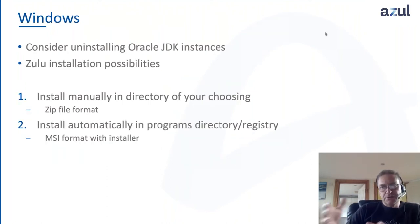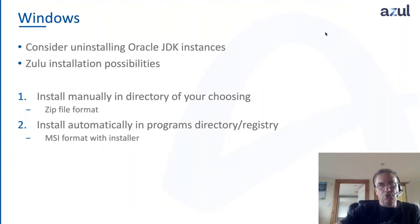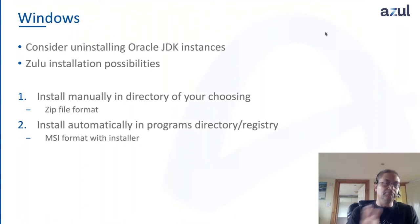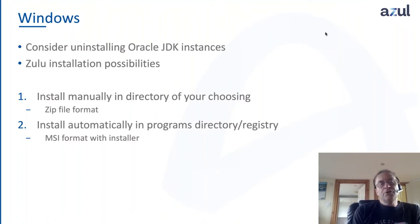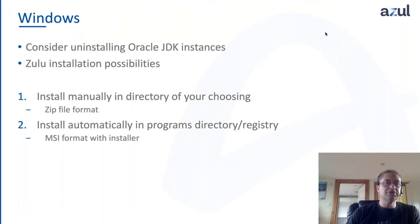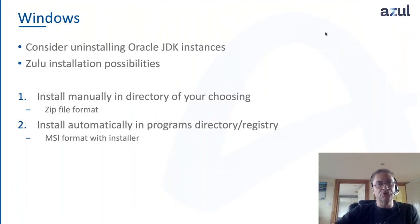Having done the analysis and figured out what you need, you then need to actually do the migration and install the new versions of Java. From an installation perspective, we provide as much flexibility as possible, matching exactly what you would have got from Oracle. On Windows there are two different ways: for a manual install, or for an automatic install there is an MSI format file that we can provide, which has an installer that will update things like the registry so that the version of Java is picked up automatically and placed into the right directory under the programs directory.